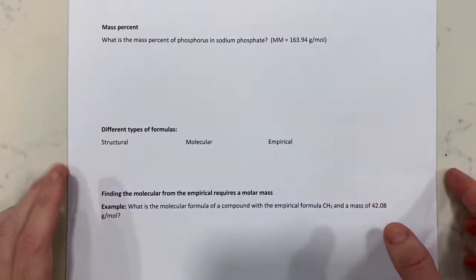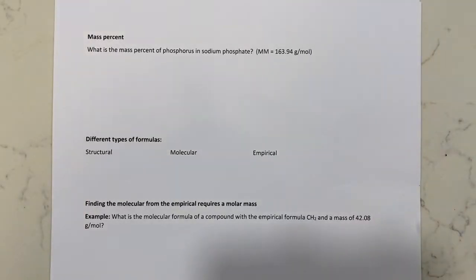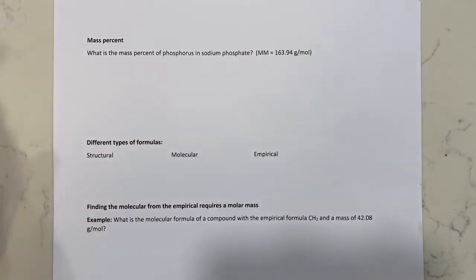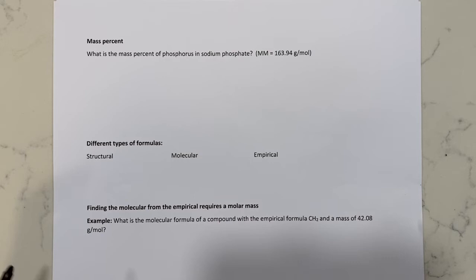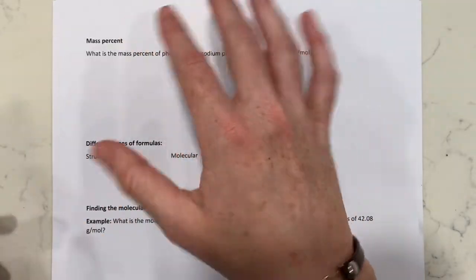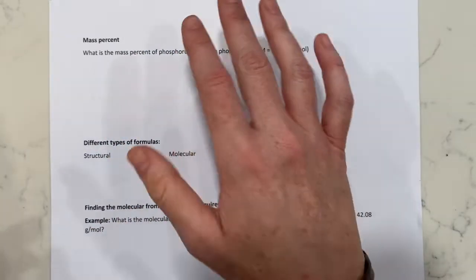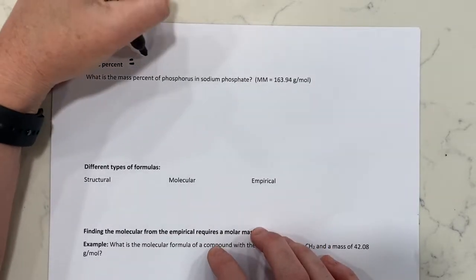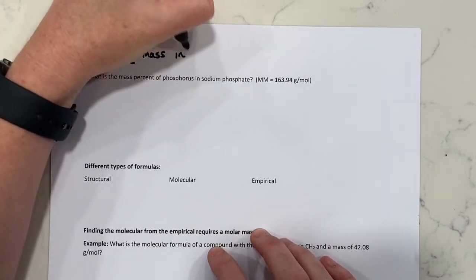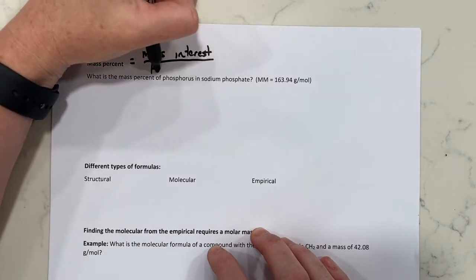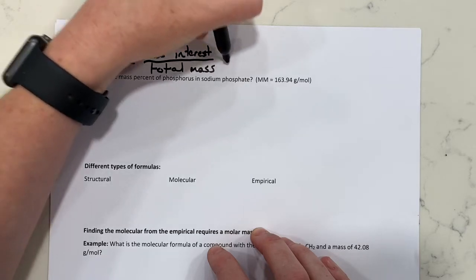Mass percent — I love mass percent. Mass percent is essentially the amount of mass something takes up in a sample. If I asked for the mass percent of your thumb in your hand, you'd weigh your whole hand including your thumb, weigh your thumb, and figure out what percent that mass is of the whole system. Mass percent equals the mass of whatever you're interested in divided by the total mass times 100%.